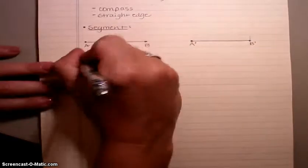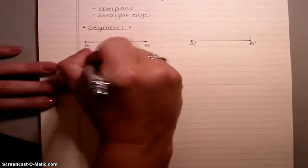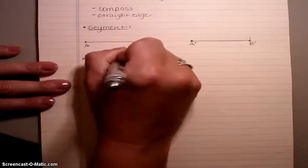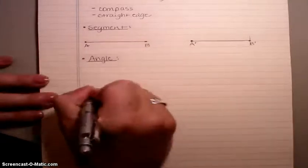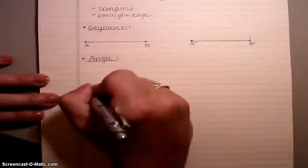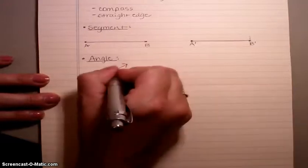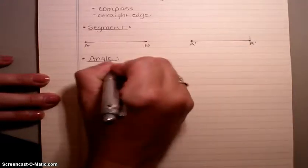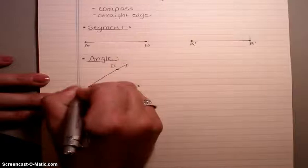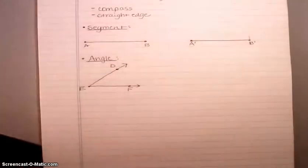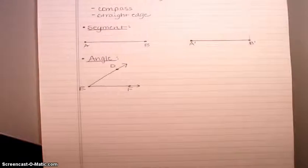The next one is copying an angle. Just like before, we're going to start by drawing the figure. Draw an acute angle, not an obtuse. I'll call this angle DEF. Now I'm going to replicate this exact angle without using a protractor or a ruler.